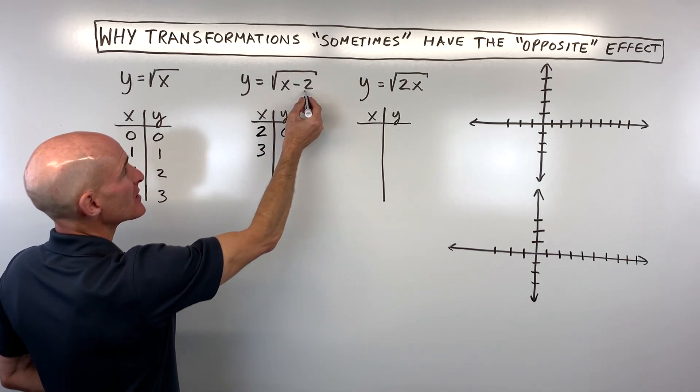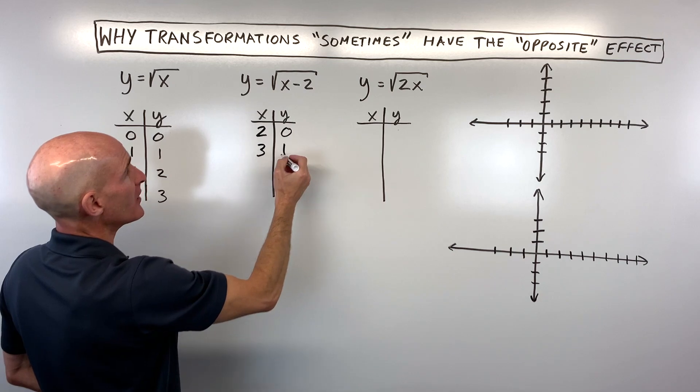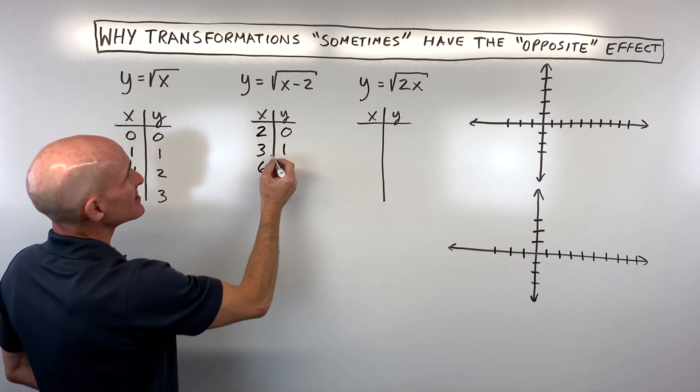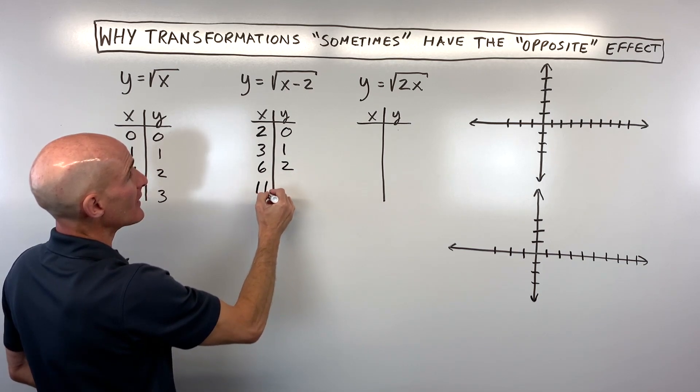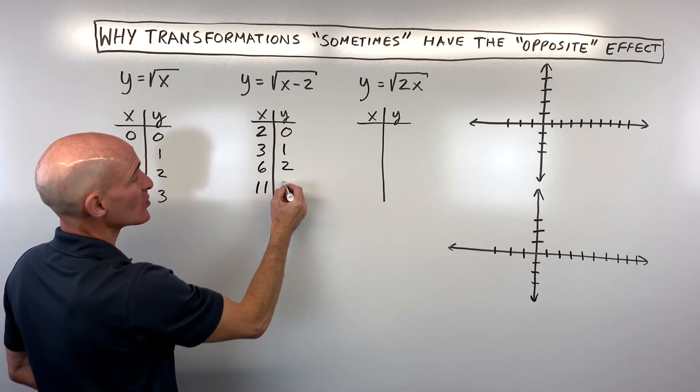Or I could put in 3: 3 - 2 is 1, and the square root of 1 is 1. Or I could put in 6: 6 - 2 is 4, and the square root of 4 is 2. And I could put in 11: 11 - 2 is 9, and the square root of 9 is 3.